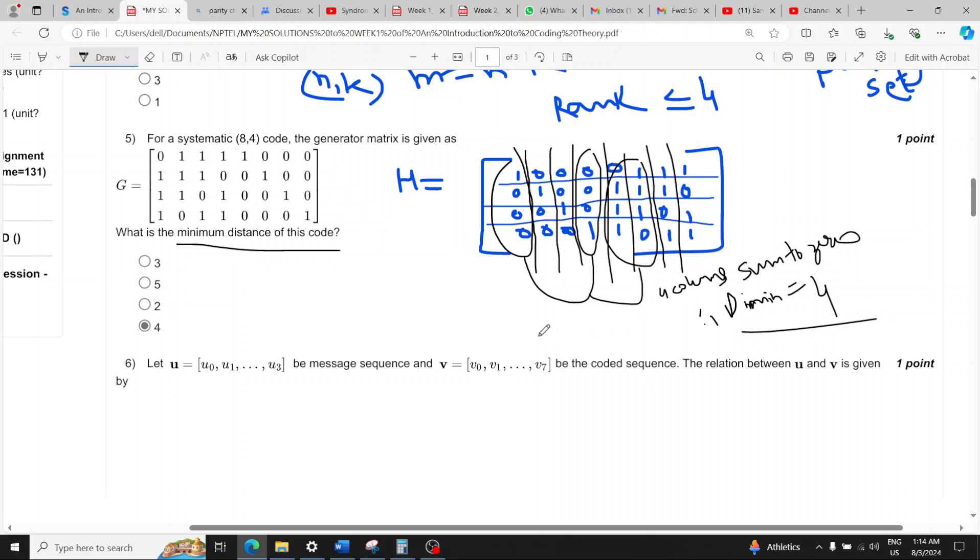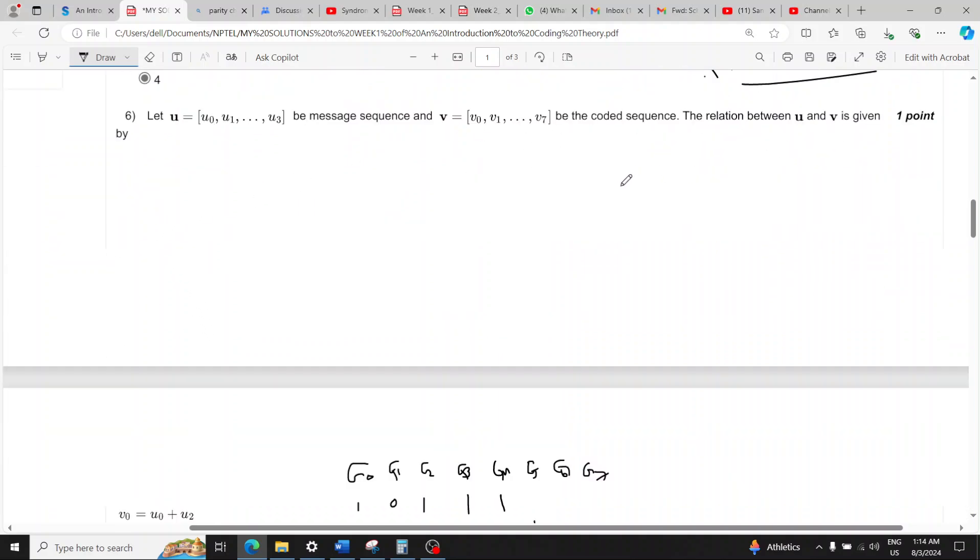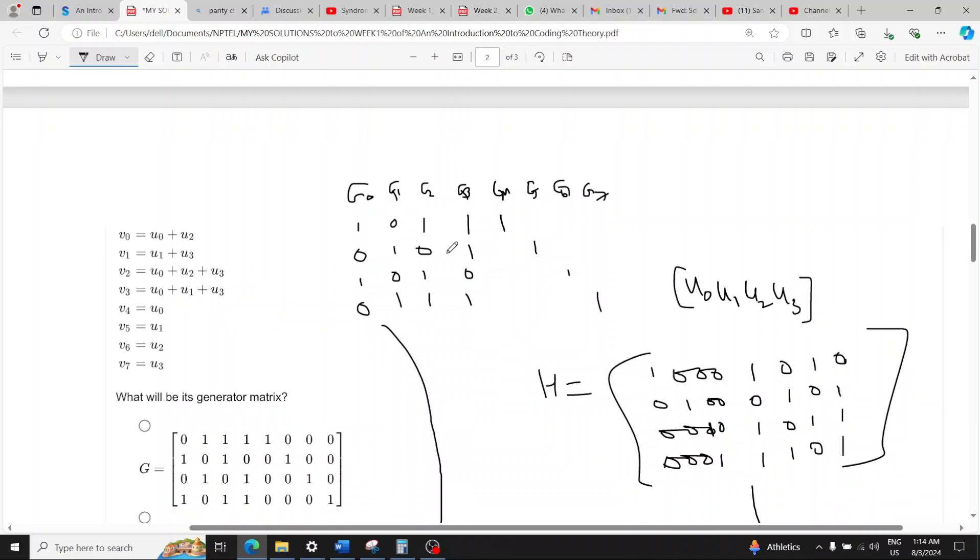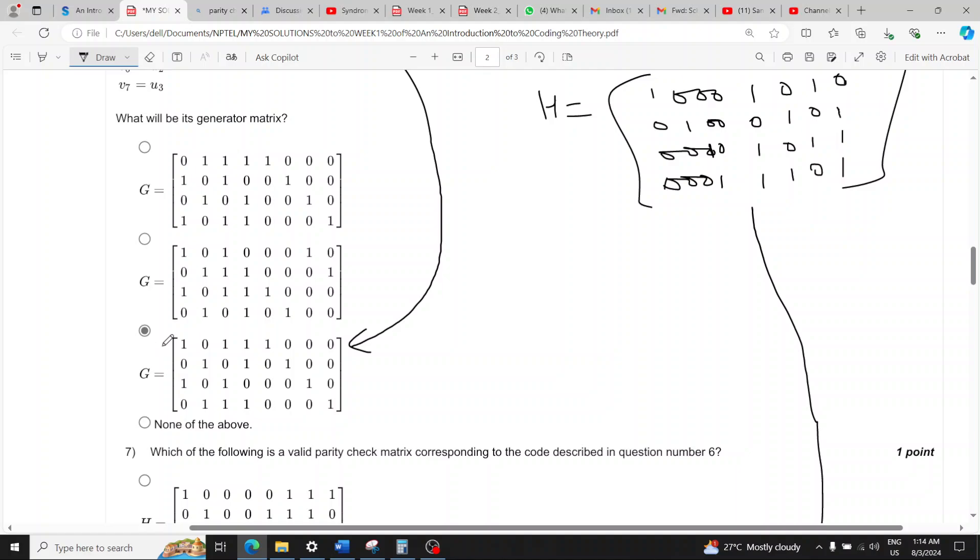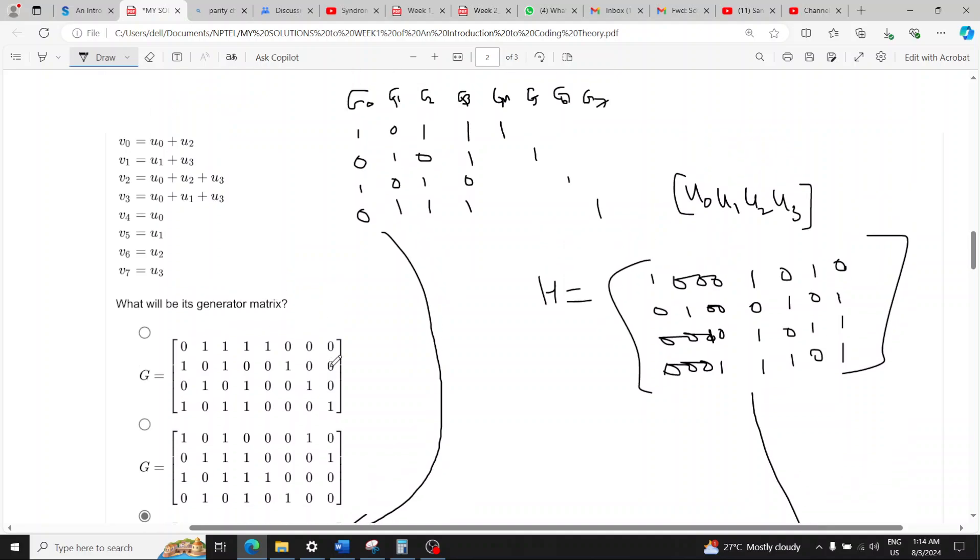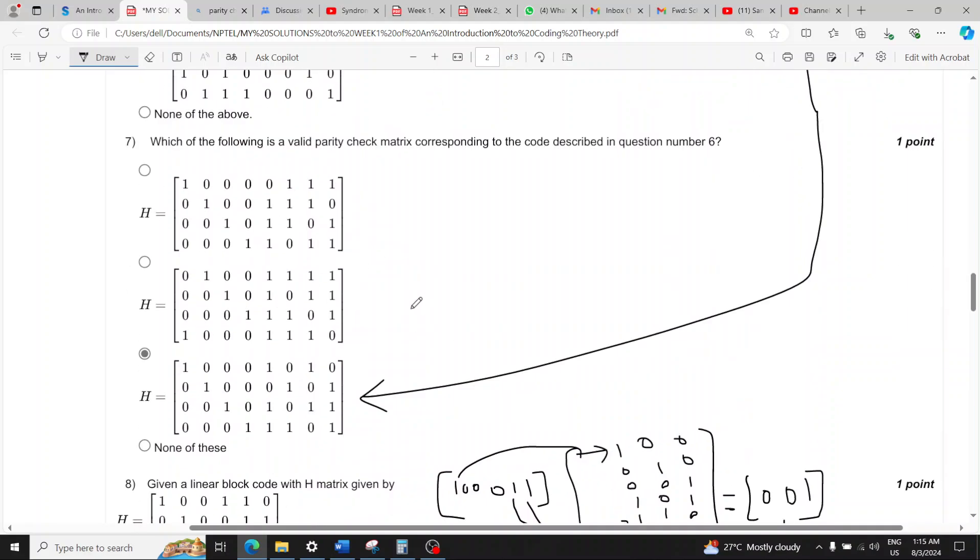Question six asks us to find the generator matrix. A new relation is given so this is the correct option, option third, the last generator matrix option is the answer. You can simply find by constructing the generator matrix using the given equations and then you can just transpose and find H also.